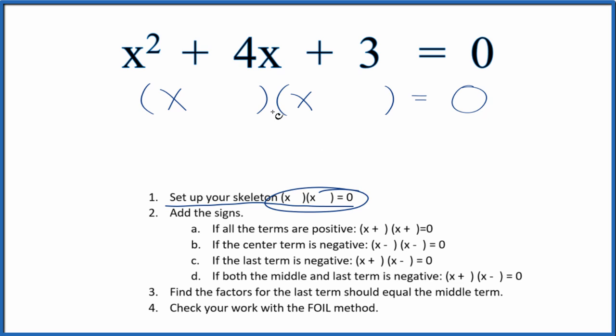Right here we have that skeleton equation that gets things set for us. Then we're going to add the signs into our skeleton equation. Since we have a positive and a positive here, all we need to do is put positives and positives as our signs here in our skeleton equation.